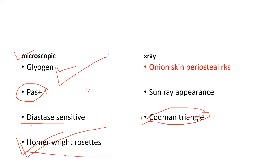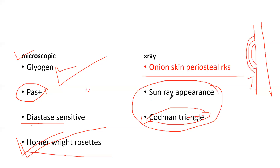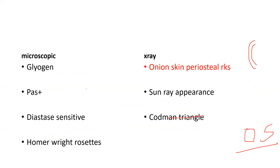All MCQ answers are in this one mnemonic. The onion skin appearance is characteristic. Sometimes sunray appearance and Codman's triangle are also seen — these occur due to periosteal reaction — but sunray and Codman's triangle are characteristic of osteosarcoma. In some cases of Ewing's they may be found, but onion skin is the most important characteristic of Ewing's.